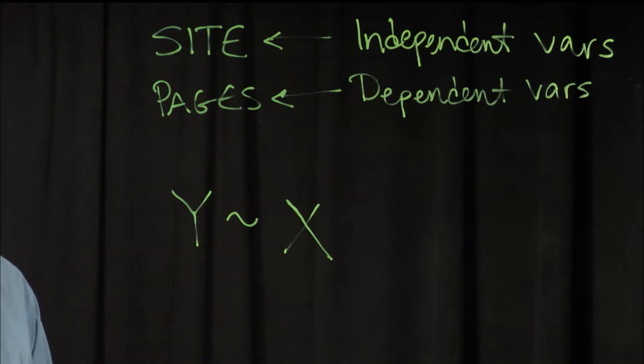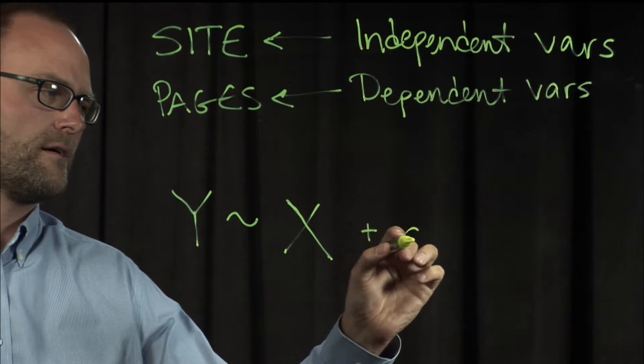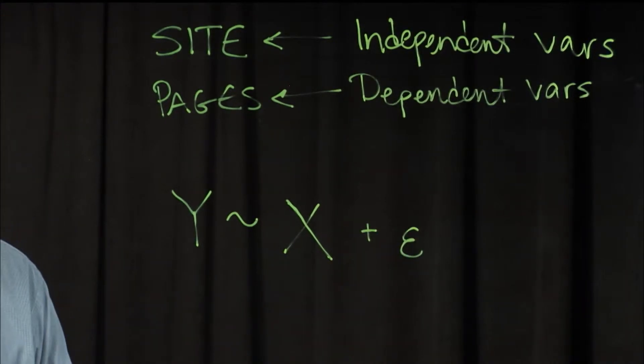But Y is related to X, and then we have to add plus epsilon, which is traditionally measurement error.